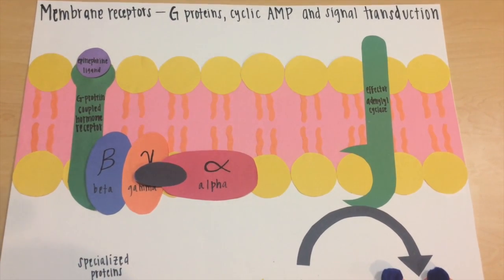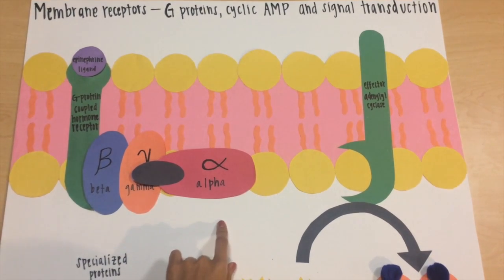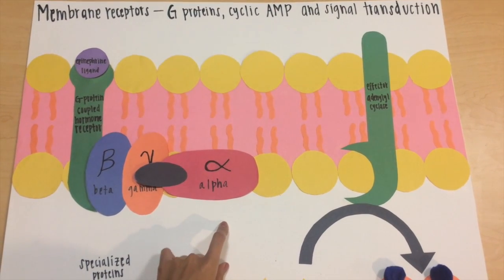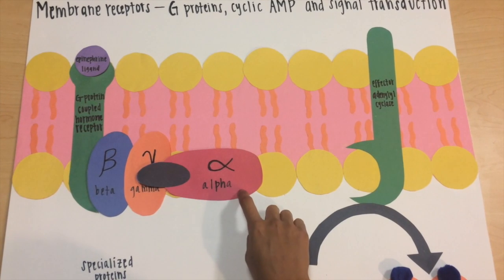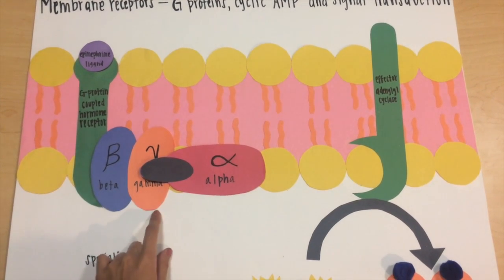Bound to the receptor is the heterotrimeric G-protein. Heterotrimeric simply means that it has three parts, which are the alpha, beta, and gamma subunits.